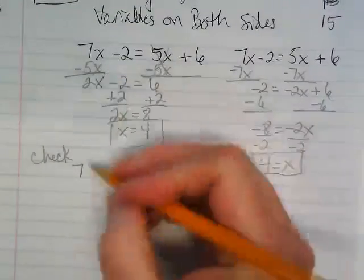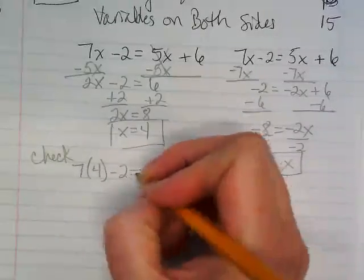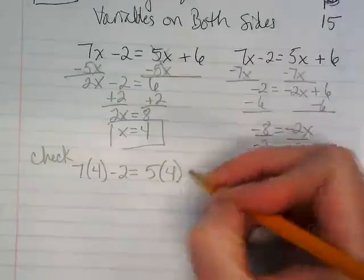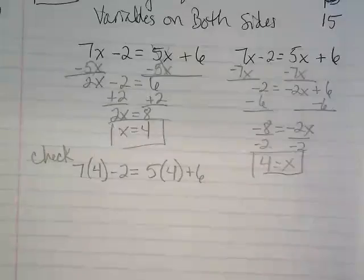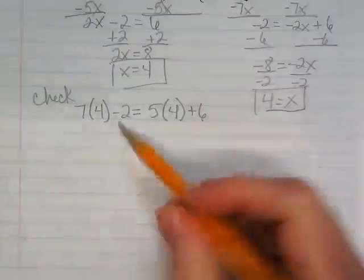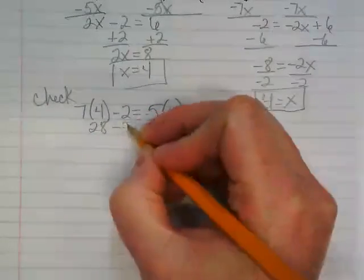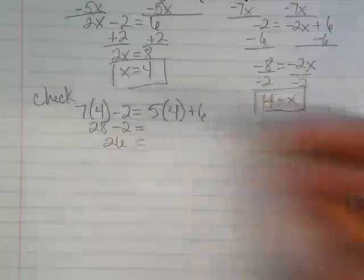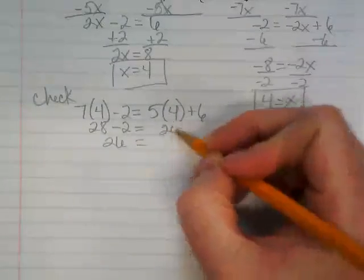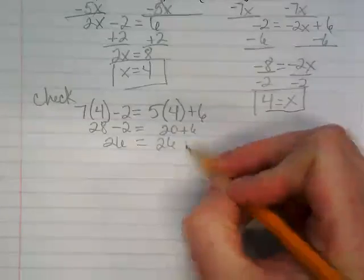Everywhere we see an x, we're going to plug in a 4. So 7x is going to be 7 times 4 minus 2 equals 5 times 4 plus 6. What's 7 times 4? 28 minus 2 equals 26. And now I'm going to work the right side of the equation. 5 times 4, 20 plus 6, and I get 26 equals 26.